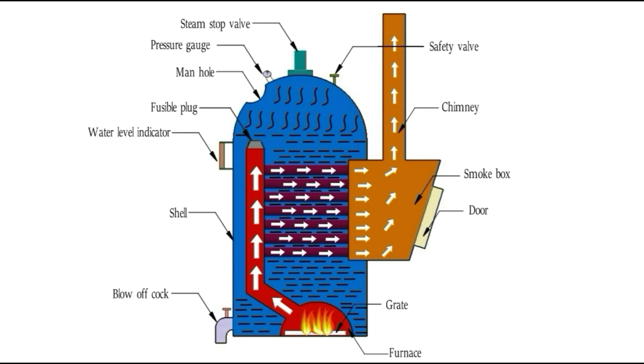The surface on which burning of fuel takes place is nothing but grate. Once the burning of fuel is started inside the boiler, the produced gases will pass through the fire tubes and will be exhausted through the chimney.